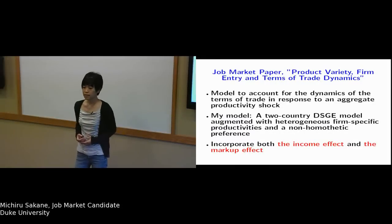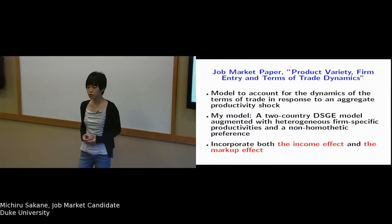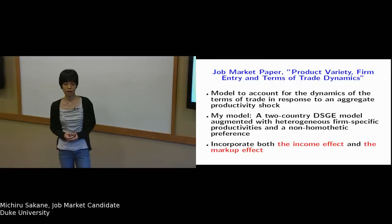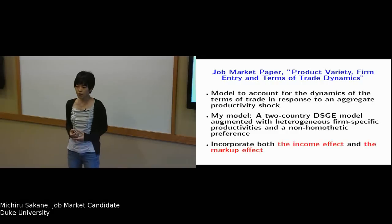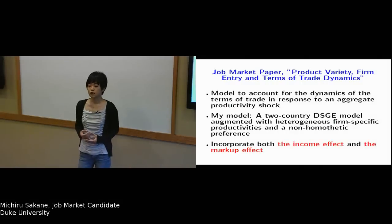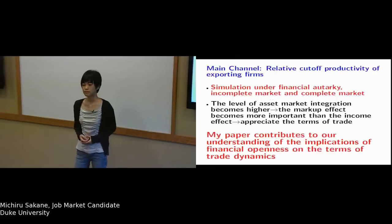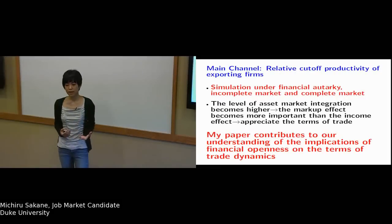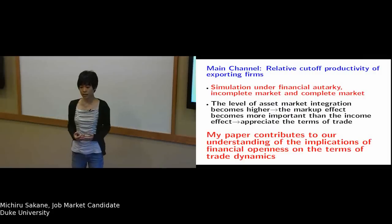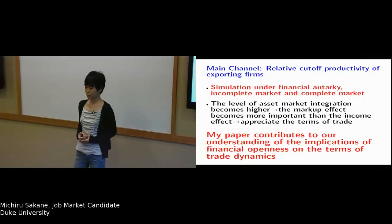The terms of trade derived in this model can be decomposed into two factors. The first factor is the relative cost of effective labor, and the other factor is the relative cutoff productivity of exporting firms. The latter factor is the main channel that can account for the dynamics of the terms of trade.